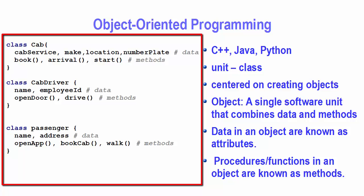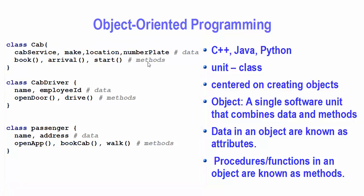An object is a software unit that combines data and methods. The object is able to combine both data and methods together. Objects, for example a cab object and a passenger object, can also exchange data between them — so data is interchangeable between the passenger object and a cab object.